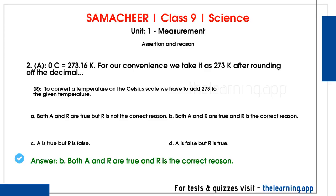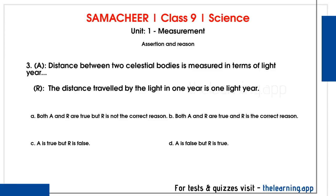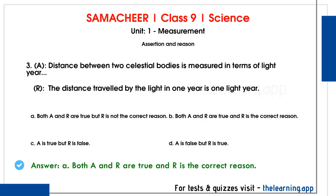Third question: Assertion — distance between two celestial bodies is measured in terms of light year. Reason — the distance traveled by light in one year is one light year. Celestial bodies such as stars and planets are very far apart, so their distances are measured in light years. Both assertion and reason are true, and the reason is the correct explanation.